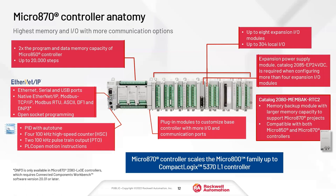The 870 has an expansion power supply module that slides into the expansion IO area when you need to boost power as you extend the IO cards. There's also a memory backup plugin card available for the 870 and the 850 — similar to how the 820 had a micro SD card slot built in — which you can use to expand memory.